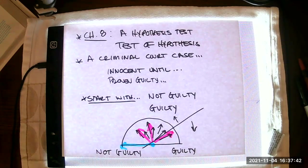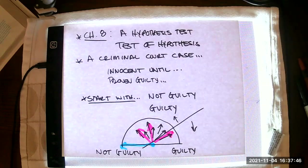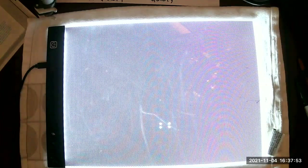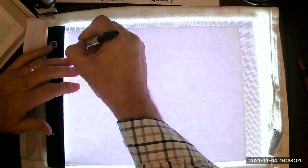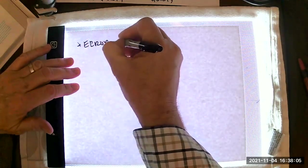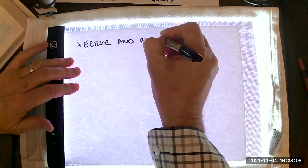We have statistical evidence, our sample data. And if the sample data is strong enough, we will move from the notion of not guilty to guilty. Let's talk a little bit about error and outcomes before we leave the court case.